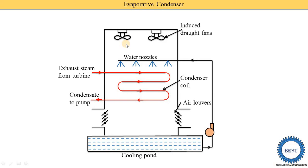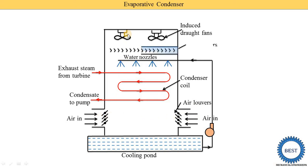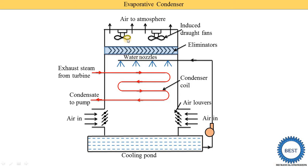An induced draft fan is provided on the top of the condenser, which sucks air in from the air louvers so air moves upward. With the air, some water vapor particles also move upward. To prevent water vapor particles from escaping into the atmosphere, eliminators are installed. The eliminators remove water vapor particles so that only air is supplied to the atmosphere.